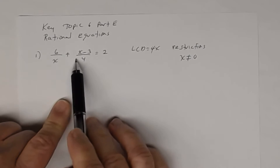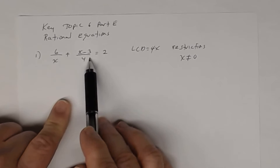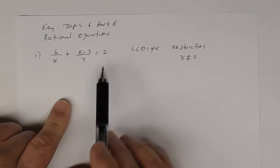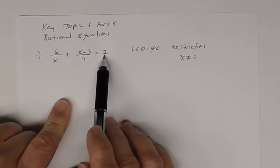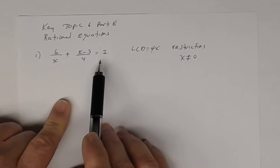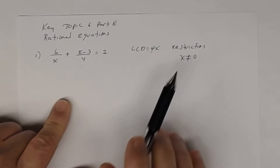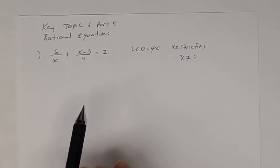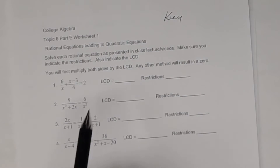The next denominator is 4 — there's no variable in it, so it will never be zero. The last denominator is 1, and that will never be zero either. So the only restriction is x cannot equal zero. The direction says to multiply both sides by the least common denominator.